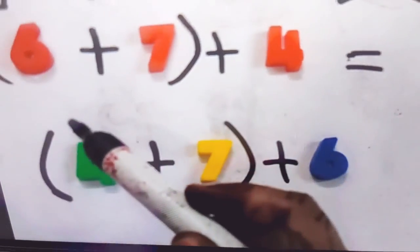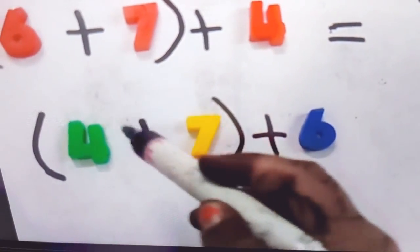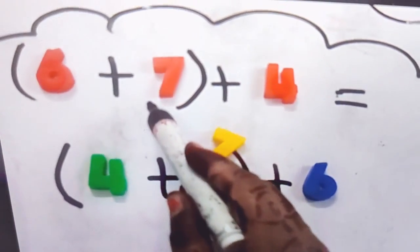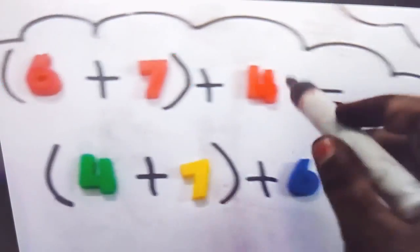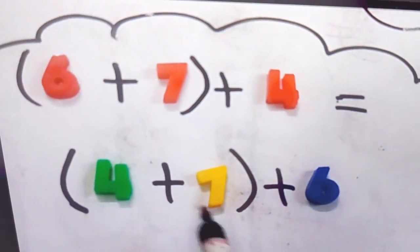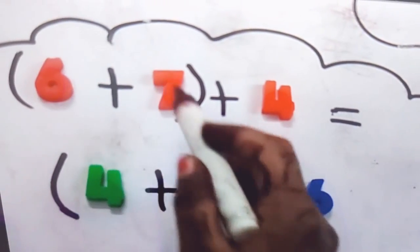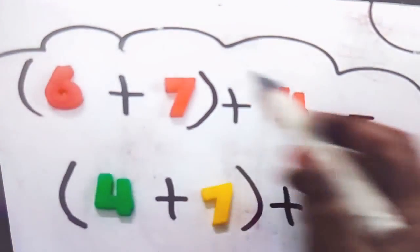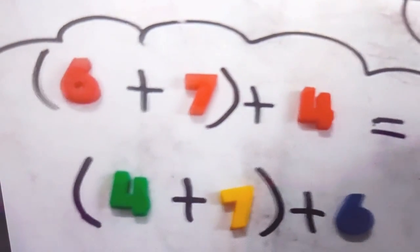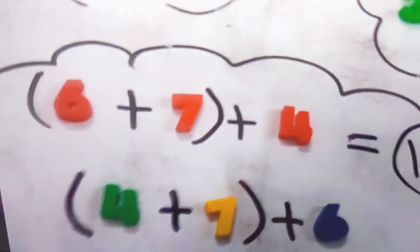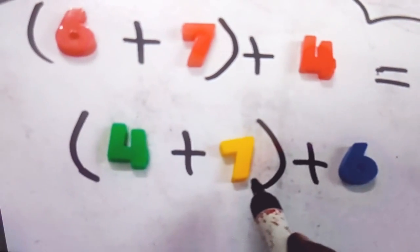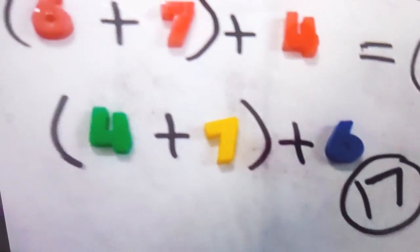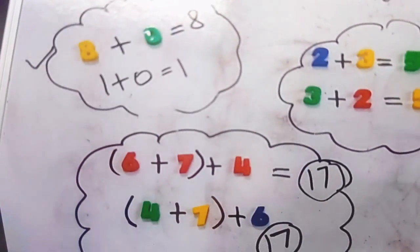Now, this property: it doesn't matter how we are regrouping the addends. It means 6 plus 7 plus 4 will equal 4 plus 7 plus 6. 6 plus 7 is 13 plus 4 is 17. Similarly, 4 plus 7 is 11 and 11 plus 6 will give us 17. So, these are the three properties of addition.